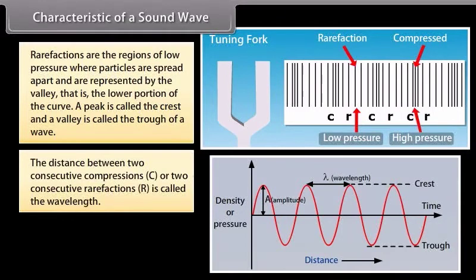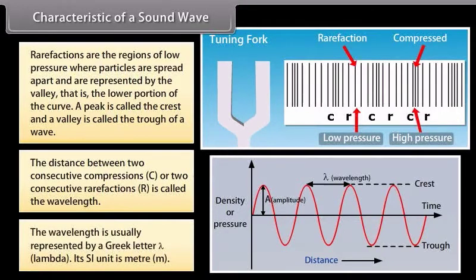The distance between two consecutive compressions or two consecutive rarefactions is called the wavelength. It is usually represented by a Greek letter lambda. Its SI unit is meter.